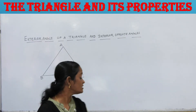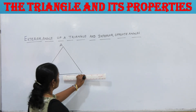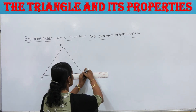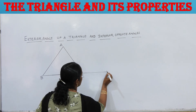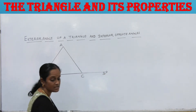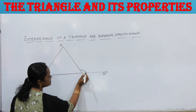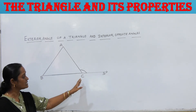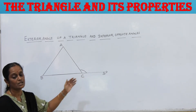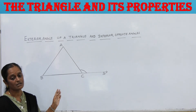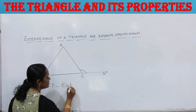Now let us draw a triangle ABC and produce the side BC to a point D. We can observe that one angle is formed here — angle ACD. This angle ACD is in the exterior of the triangle ABC, so it is called the exterior angle of the triangle.